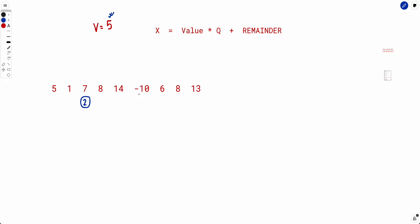Similarly, for -10: taking -10 modulo 5 gives 0. For a negative number, we keep adding 5 until it becomes a non-negative number less than 5. So -10 mod 5 = 0, meaning you can form anything that gives modulus 0 when divided by 5. Let's prepare an array indexed by remainder: with value=5, possible remainders are 0, 1, 2, 3, 4.